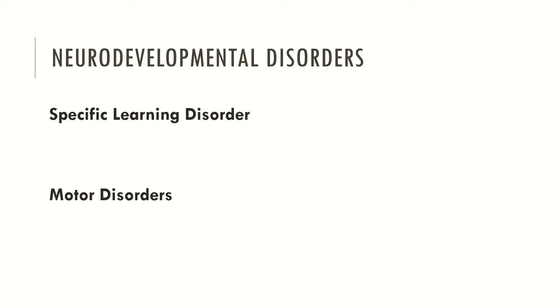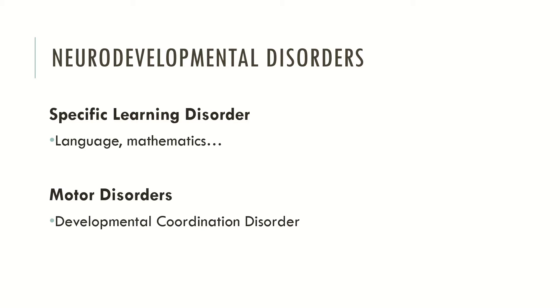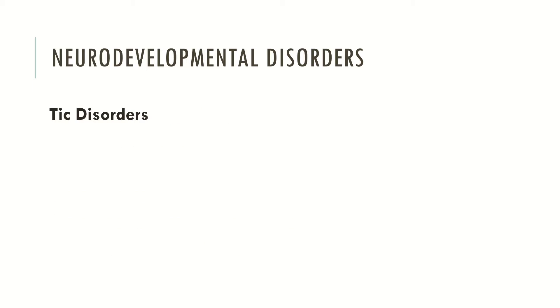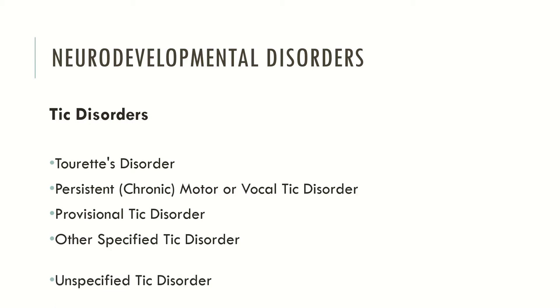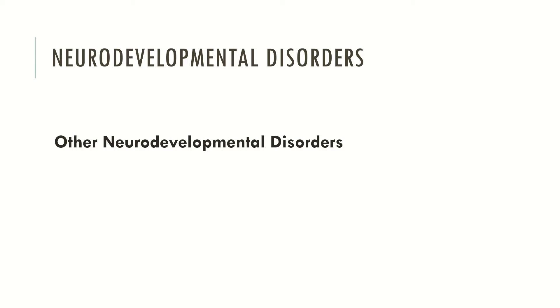Another two categories are specific learning disorder and motor disorders. In specific learning disorders we have language disorder and mathematics. In motor disorders we have developmental coordination disorder and stereotypic movement disorder. We also have tic disorders, other specified neurodevelopmental disorder, and unspecified neurodevelopmental disorder. In many diagnostic criteria in the DSM-5 you may specify the severity of each disorder — typically mild, moderate, severe or profound.